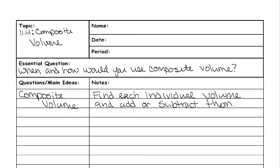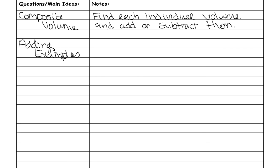First I'm going to go over some adding examples. These pictures are harder to draw, so I'll show you how. The first one is like a snow cone. You draw a semicircle, then a triangle coming off the bottom of it. To finish off your sphere, you do a little arc in the front and a little arc in the back. It needs a height and a radius to find its volume.